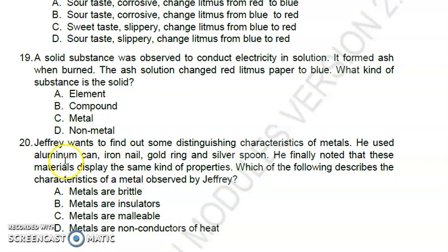Number twenty: Jeffrey wants to find out some distinguishing characteristics of metals. He used aluminum can, iron nail, gold ring, and silver spoon. He finally noted that these materials display the same kind of properties. Which of the following describes the characteristics of a metal observed by Jeffrey? The answer is letter C - metals are malleable.